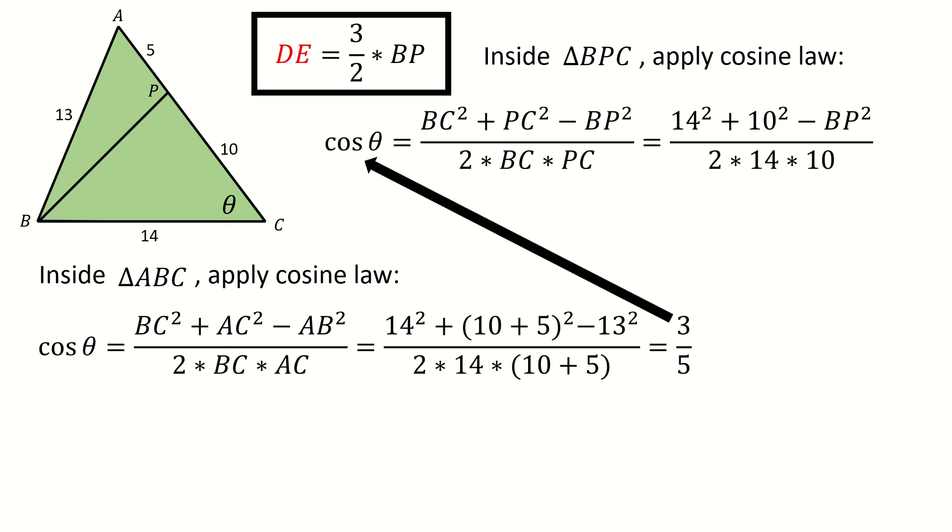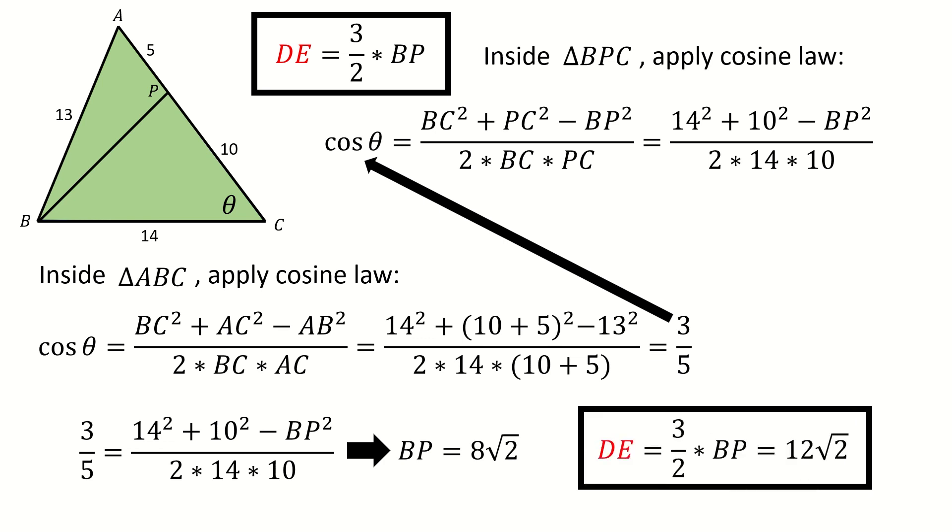Next, we plug in this three-fifths to the top equation. Now we are ready to solve BP. We get BP equals 8 square root 2. So finally, we get DE equals 12 square root 2.